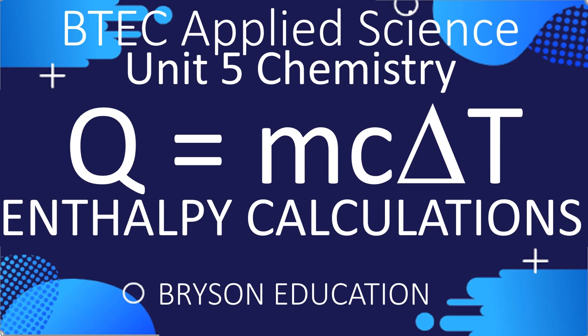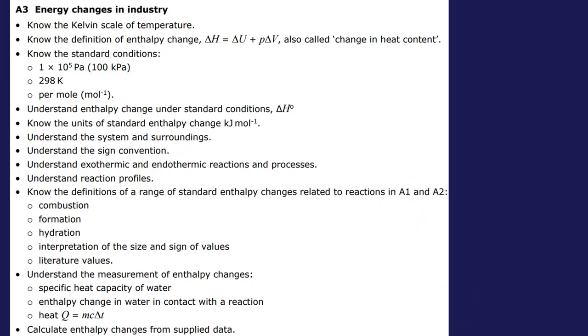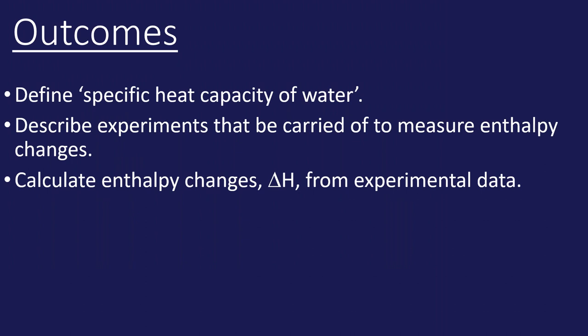Welcome to this chemistry lesson on BTEC Applied Science Unit 5 Chemistry. We're going to look at using Q = mcΔT in order to calculate enthalpy changes. In terms of the specification, this is towards the end of learning aim A3, which covers the measurement and use of Q = mcΔT to calculate enthalpy changes.